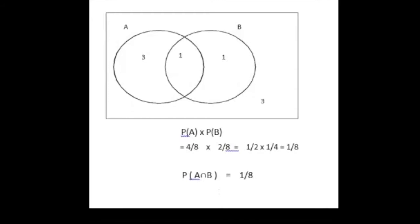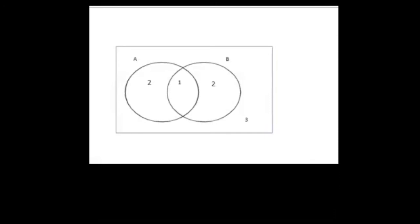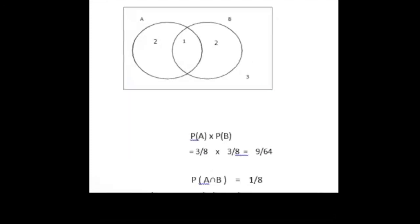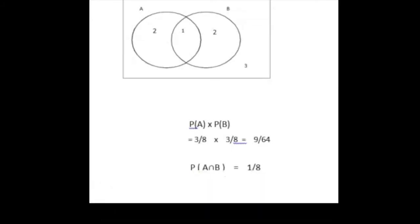Now let's consider what would happen if we moved one of the three A's in the A-only region and put it in the B-only region. The Venn diagram would then look like this. Now P(A) is 3 out of 8 and P(B) is also 3 out of 8, giving P(A)×P(B) = 9 out of 64. But P(A∩B) is still 1 out of 8. Since 9/64 ≠ 1/8, A and B are not independent — simply transferring one element changed the outcome.